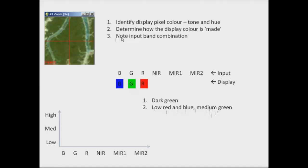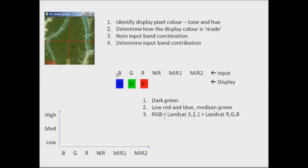The next step is to note the input band combination, and what we've said here is that red, green, blue is being displayed as Landsat bands 3, 2, 1 — so it's a true colour composite. Then we look at how the colour actually relates to the input band contribution. Where we said in step 2 that it's low red and blue, that actually means it's low in bands 3 and 1, and medium in band 2 for the green band.